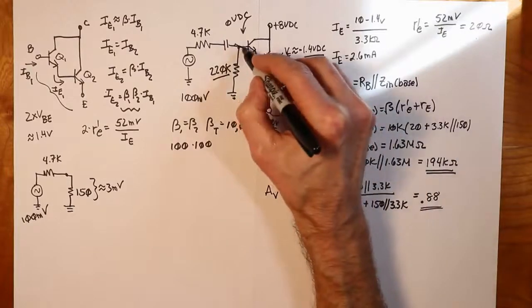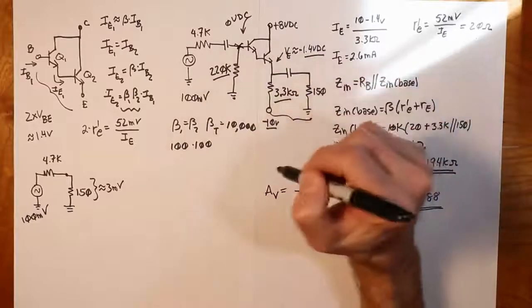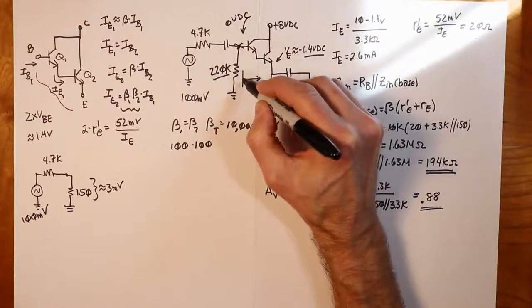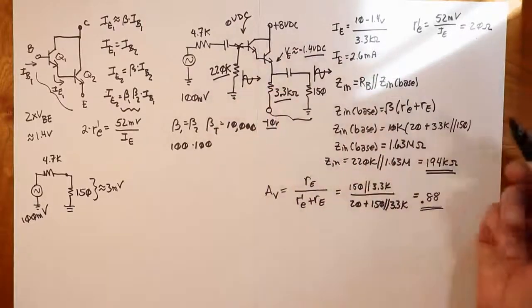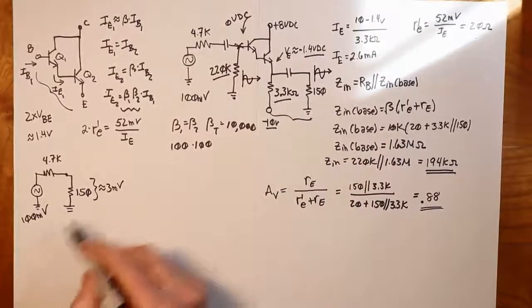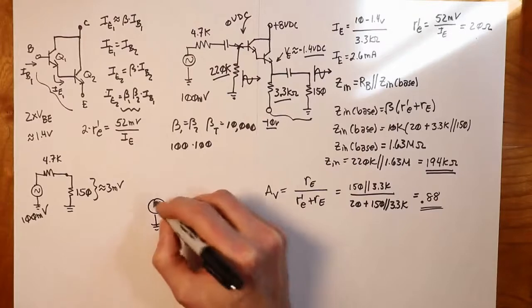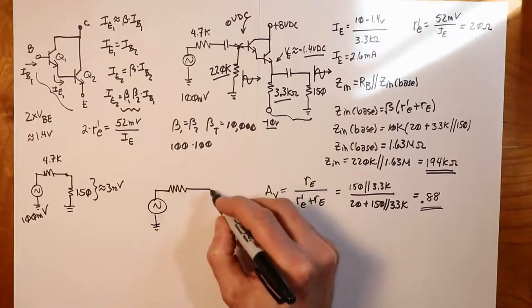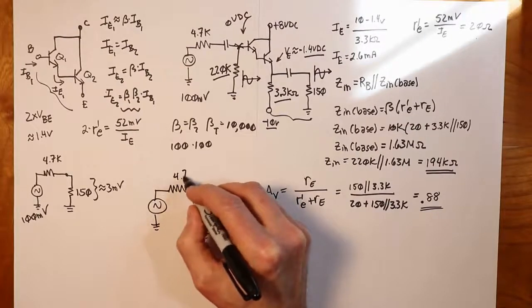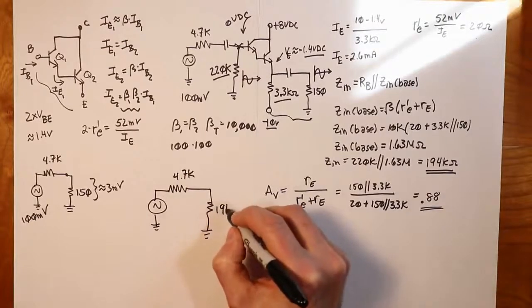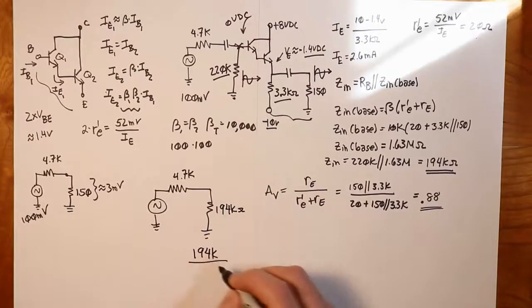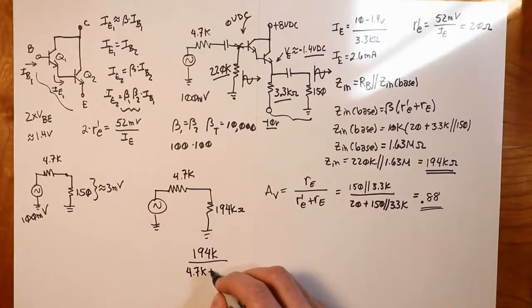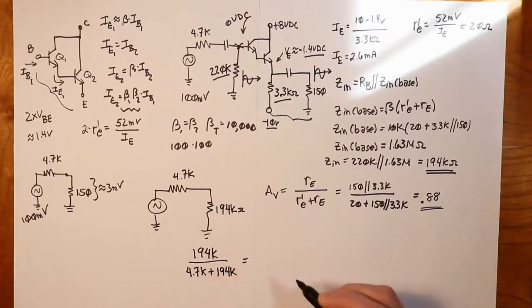Now we get 88% of the signal that comes in here. Whatever's coming in, that's what we're going to get out. Remember this is non-inverting, so we have this phase in and we're going to get that phase out. How much of the 100 millivolts do we actually get to the base? There is a voltage divider going on. However, because of this very high input impedance, this isn't bad at all. We have our 4.7K, and the input impedance is 194K. So that divider would be 194K divided by 4.7K plus 194K, and that works out to approximately 0.976.